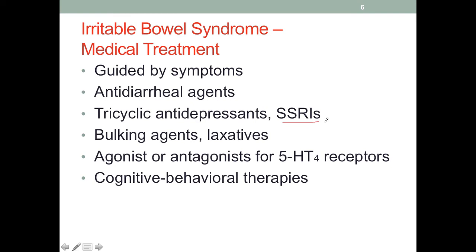Again, treatment is guided by the symptoms. So if we're talking about D-type or C-type IBS, we can use bulking agents or a laxative to deal with constipation or diarrhea depending on which one it is. We can also use cognitive behavioral therapies, because we can partially control our bowel movements and there are certain things we can do to control stimuli. Cognitive behavioral therapy deals a lot with stress reduction and controlling fear or anxiety, and is done with a properly certified therapist.